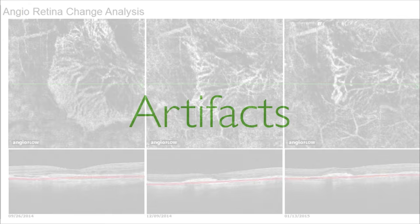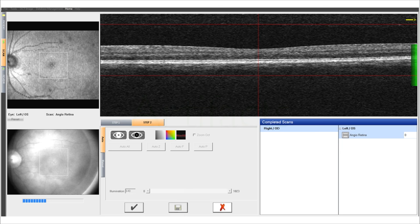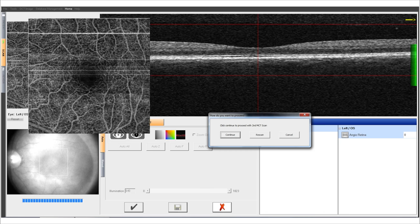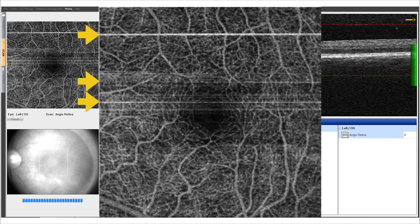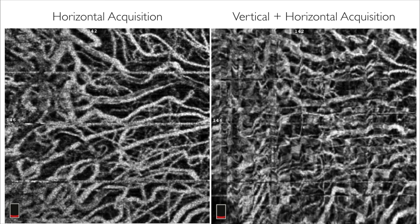Speaking about artifacts: with the OptoView, when you get an image you can actually get some lines, and those lines are actually eye movement. Since something is moving, the instrument recognizes it as a vessel. The software can cancel most of those, but if a patient has poor fixation - fixed in one horizontal position then moves vertically - and these are put together, you have a mess. The horizontal image is much better than the combined images. So even with artifact removal, you actually create more artifacts because fixation moves.